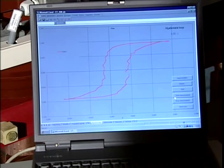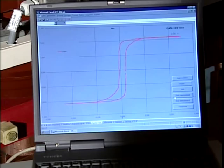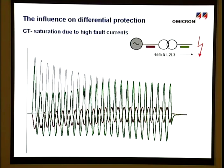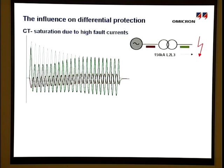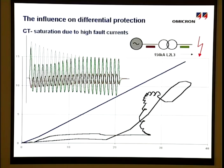Based on the measured hysteresis loop and the other CT parameters already mentioned, a short circuit with 156 kA was simulated. In the result of the relay offline simulation, the locus of the differential and the stabilizing current remain in the stabilizing area, below the tripping characteristic, despite the heavily saturated current, so that stability is provided.